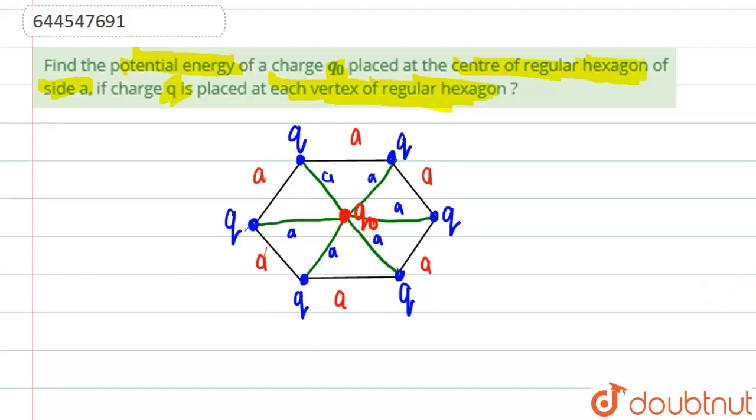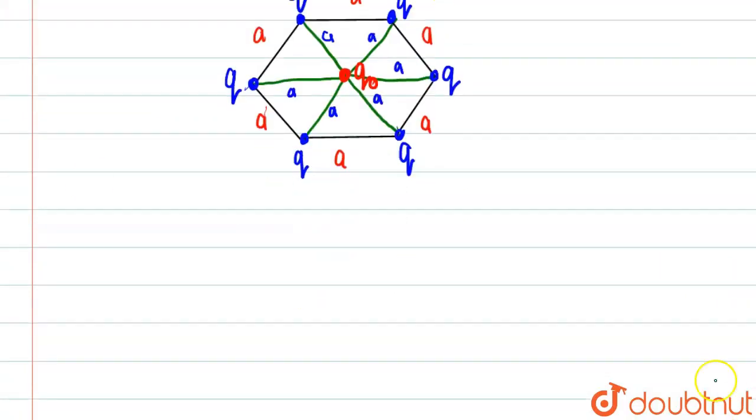So basically we need to find the potential energy on this charge Q0 due to all these charges. So if you remember the formula for potential energy U is what? Basically K which is the constant, into Q1 Q2 divided by R which is the distance. So if you take out for one charge, all charges are at same distance.